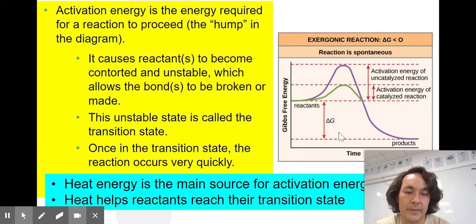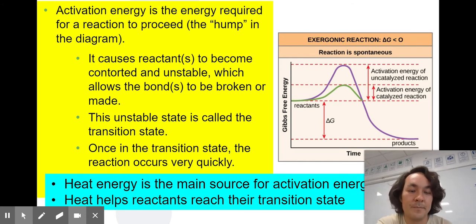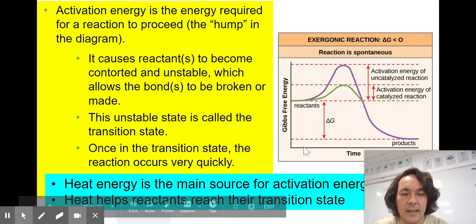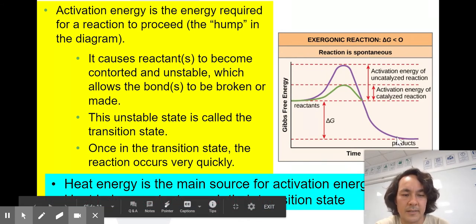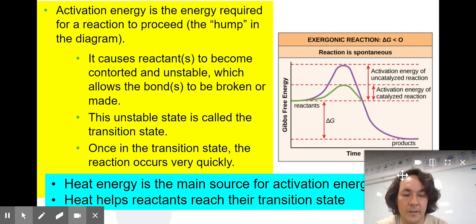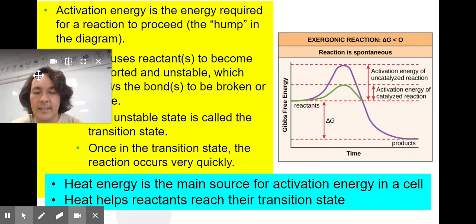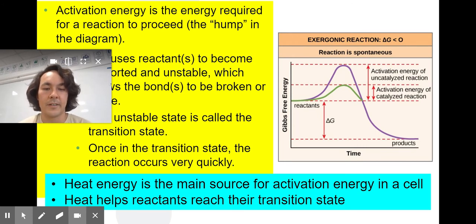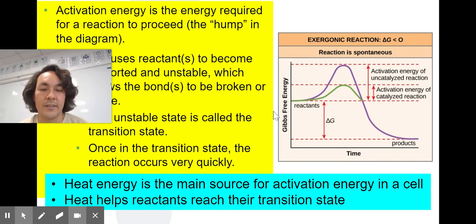We did this as a demonstration — I added catalase, the enzyme, by activating some yeast. You could also extract it from potatoes. Almost all living things have catalase, and it breaks apart hydrogen peroxide into water and oxygen much more quickly. Heat energy is the main source for activation energy in the cell, helping reactants reach their transition state. Once in a transition state, a little bit of heat will make these reactants turn into products very quickly. This is an exergonic reaction giving off energy.